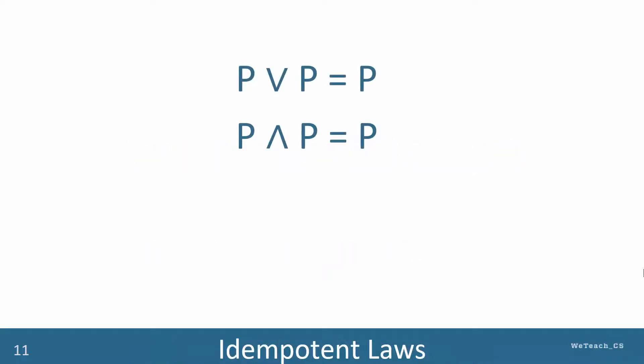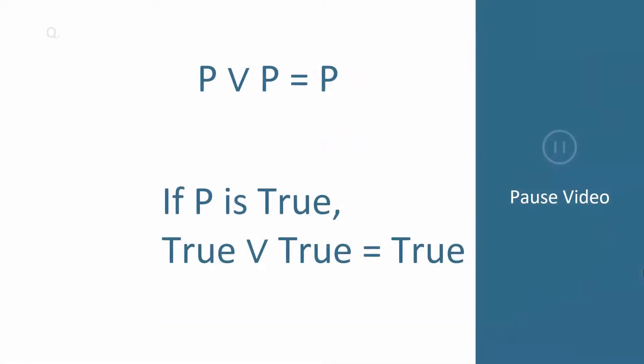The idempotent laws essentially show that when a Boolean term is operated on itself using AND or OR, it remains unchanged. Examine the next four slides carefully, pausing the video each time.